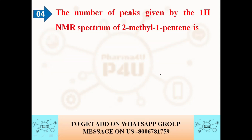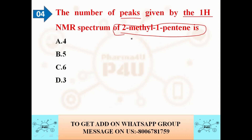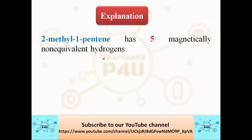The next question is: the number of peaks given by the 1H NMR spectrum of 2-methyl-1-pentene is — option A: 4; option B: 5; option C: 6; option D: 3. To solve this, draw the chemical structure of 2-methyl-1-pentene and count the number of non-equivalent hydrogens. The answer is 5, so the correct option is B. 2-methyl-1-pentene has 5 magnetically non-equivalent hydrogens.